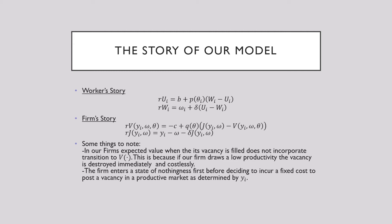This is very much like what we see before, but we see that V is not in our employed bellman. This is because if our firm draws a low productivity, the vacancy is destroyed immediately and costlessly. This is an important point there. Firms enter a state of nothingness before deciding to incur a fixed cost to post a vacancy in a productive market which is determined by y_i. So until it draws a productive vacancy, it's not going to have this rV status. It only transitions if it draws a high enough productivity here.